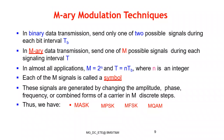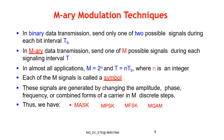Let us now consider M-ary modulation techniques. In binary data transmission, we send only one of two possible signals during each bit interval. For example, in BPSK, for one bit interval, either 0 or 1 is carried with one phase — either 0 degrees, 180 degrees, plus 90 degrees, or minus 90 degrees. In M-ary data transmission, we send one of M possible signals during each signaling interval T. QPSK is one form of M-ary modulation technique, because there we send two bits with one phase — there are four possible states: 0,0; 0,1; 1,0; and 1,1. In almost all applications, M = 2^N, where N is the number of bits.